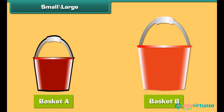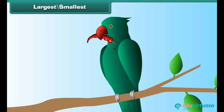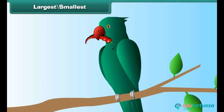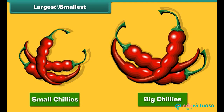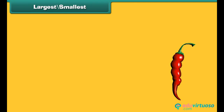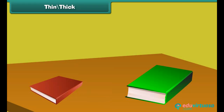Basket A is shorter than Basket B. Remember the red chilies a parrot eats — there are small chilies and big chilies. Among three chilies, the first is the longest and the third is the smallest. Some objects are thin and some are thick.